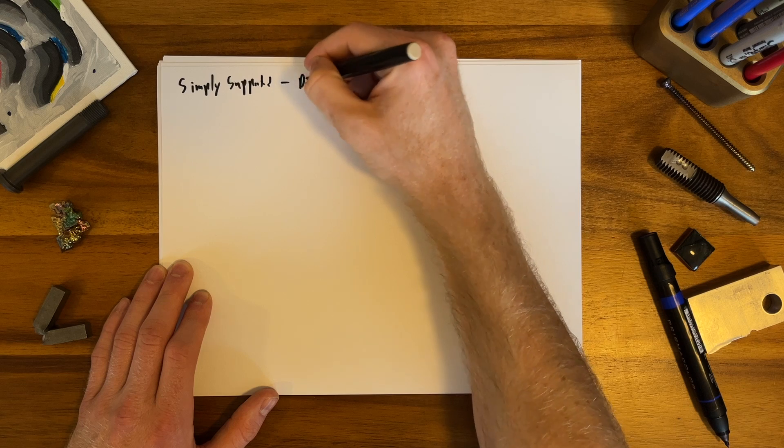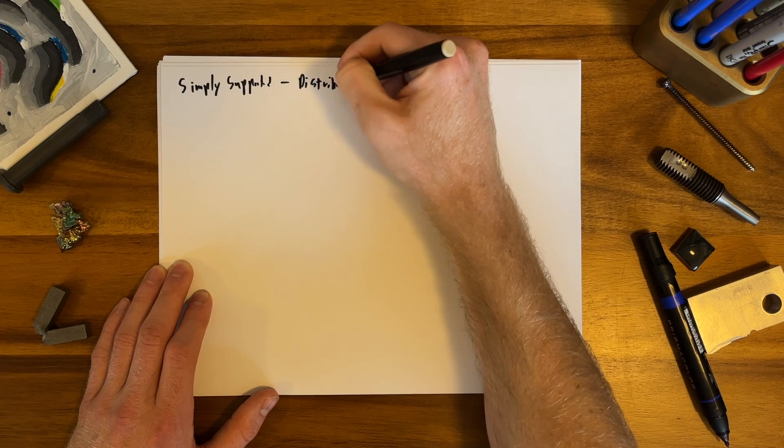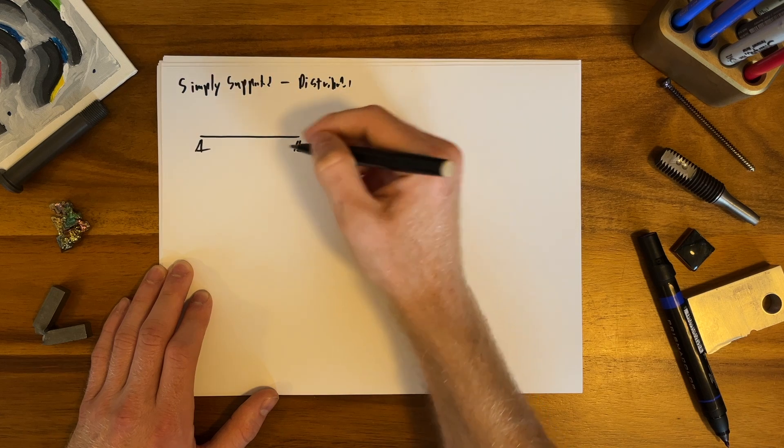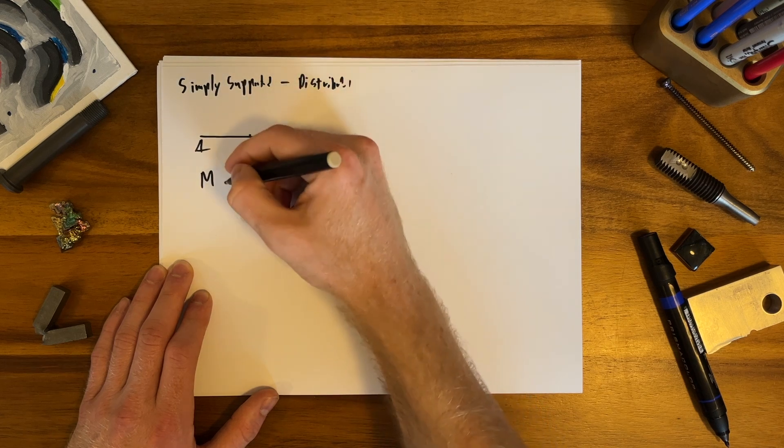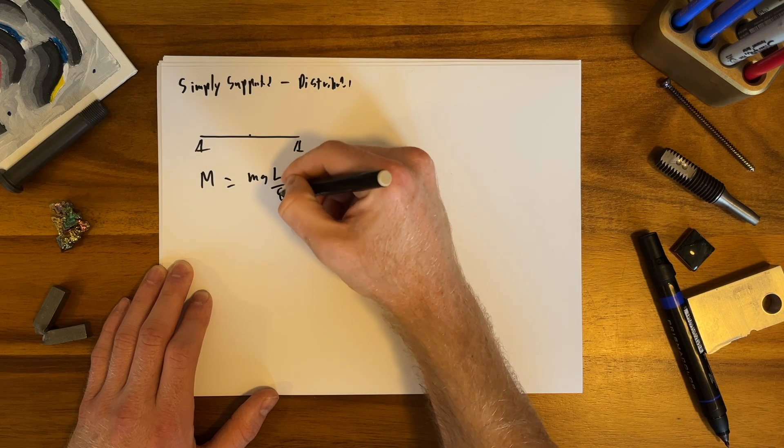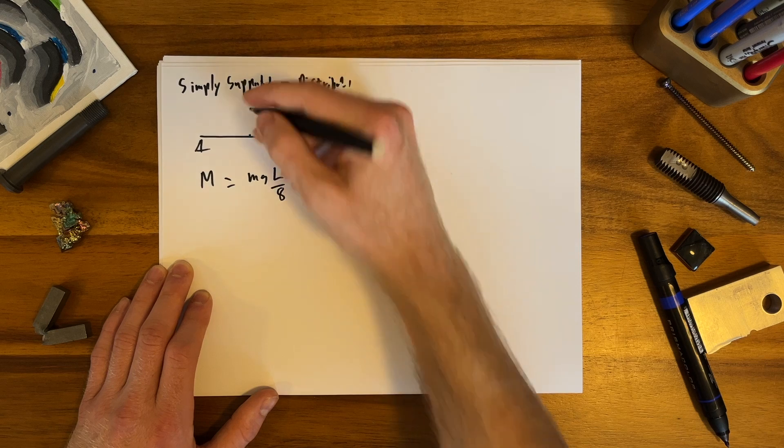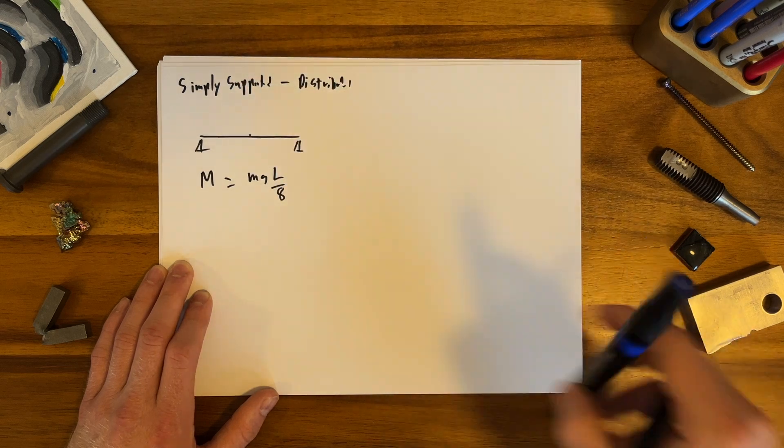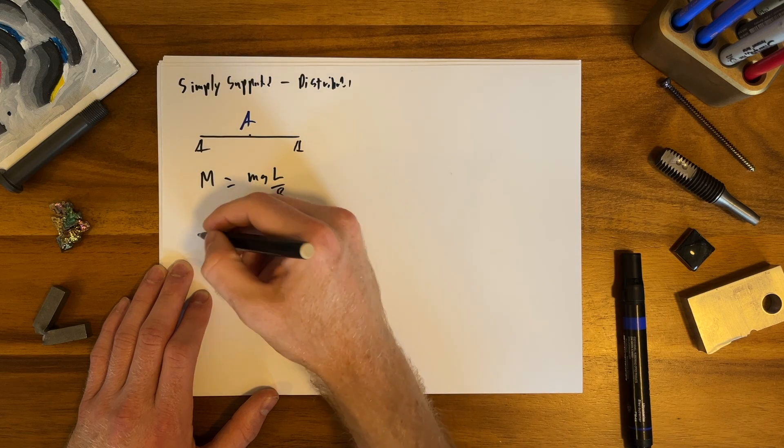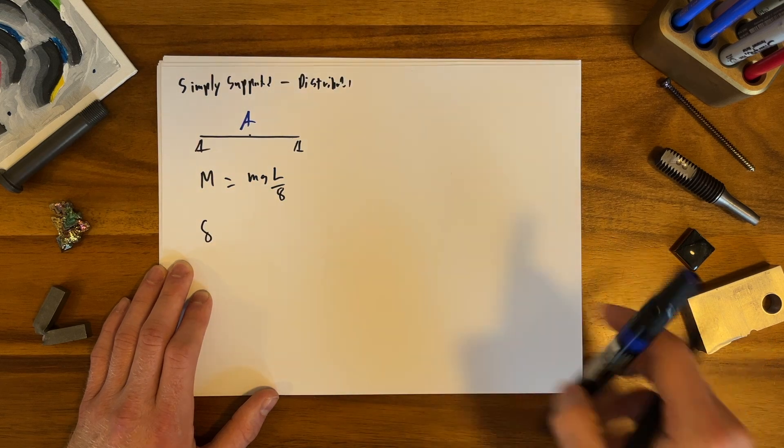We consider simply supported, distributed load. What we find is the peak moment is in the middle and the value is MgL over 8, where in this case L equals A because our length A is two-thirds L.